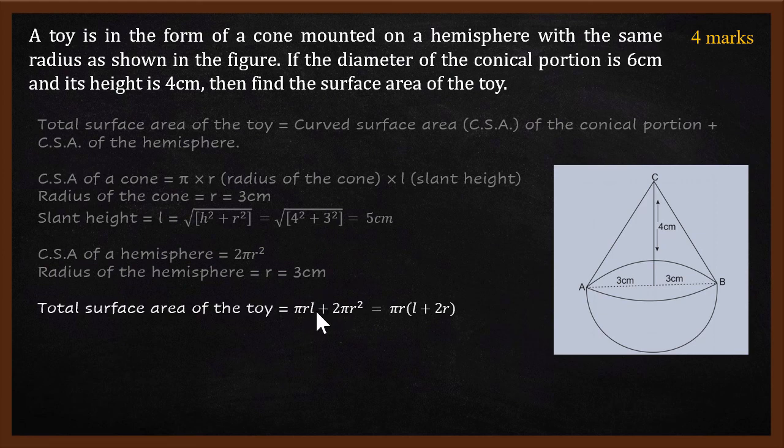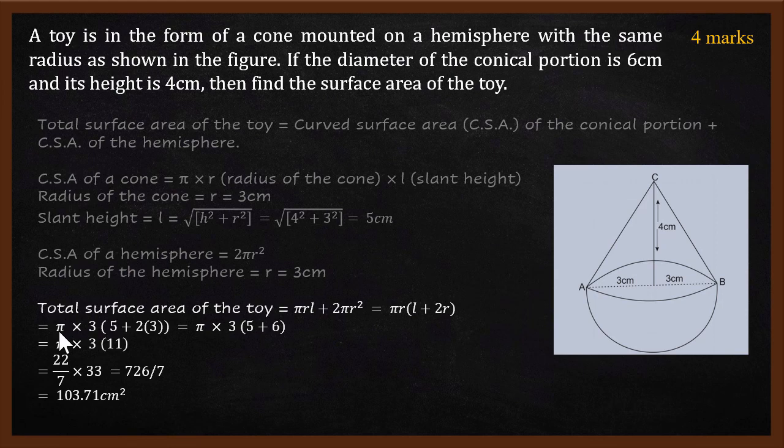Now if you add these two, you will get πrL, which is the surface area of the cone, and 2πr², which is the curved surface area of the hemisphere. If you add these two, you get πr as common, and L plus 2r within the bracket. Substituting, πr is π times 3, L is 5 cm, 2 times r is 6. So π times 3 times (5 plus 6), which is 11.